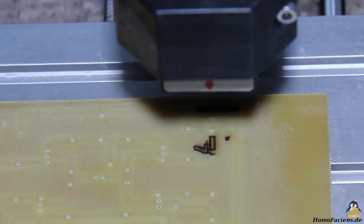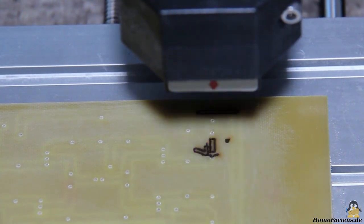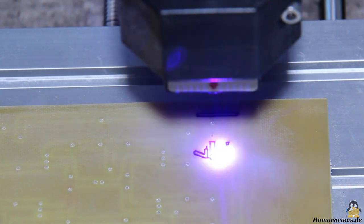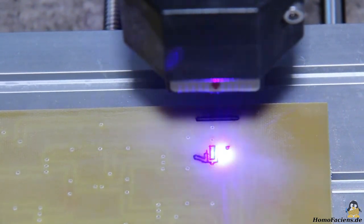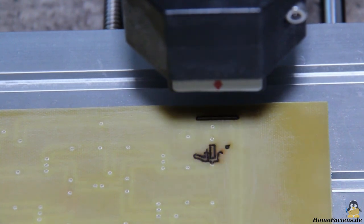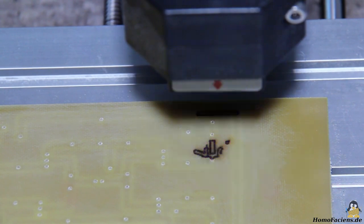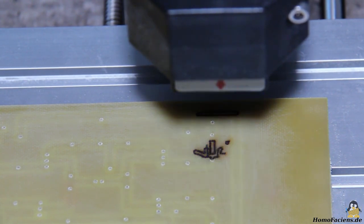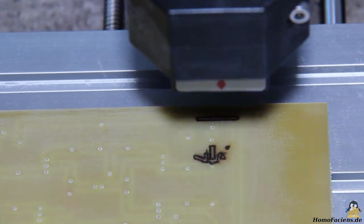Various tests with different laser powers have shown that the point from vaporization to charring is difficult to hit. To solve the problem I don't work with a constant laser beam but trigger short pulses with a movement of one tenth of a millimeter between two laser bursts. In addition I sanded the surface of the circuit board so that the laser light is better absorbed.